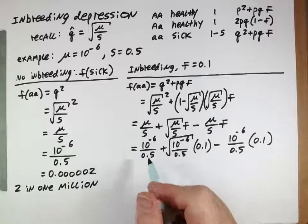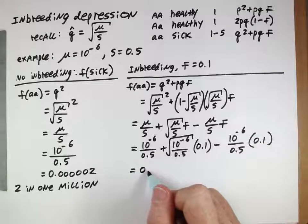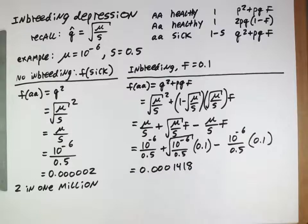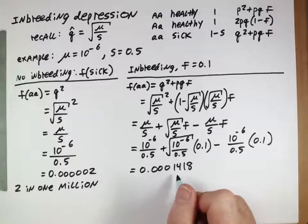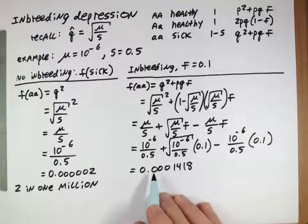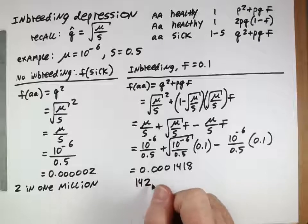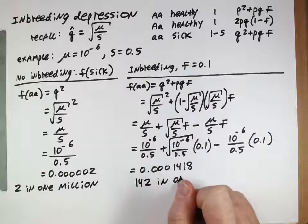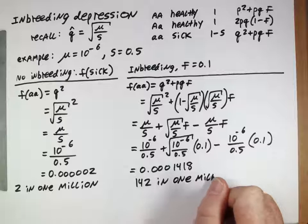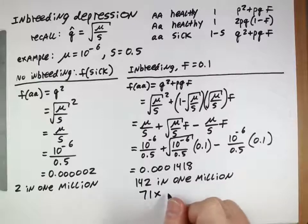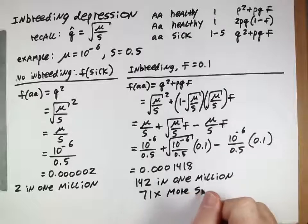When we multiply all that out and combine all those terms, we end up getting this value: 0.001418. Now if we think about how many sick individuals are there per million, it's actually 142 sick individuals in every million. That's 71 times more sick people.